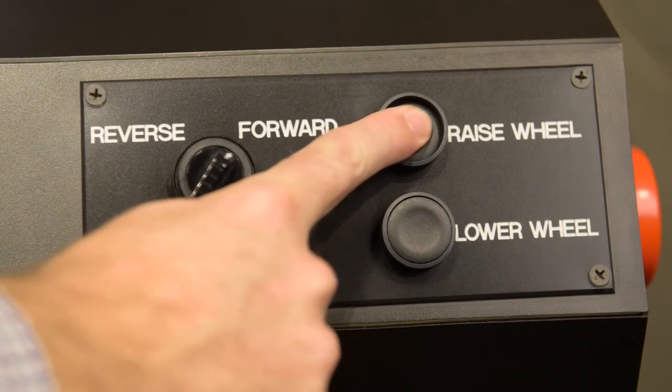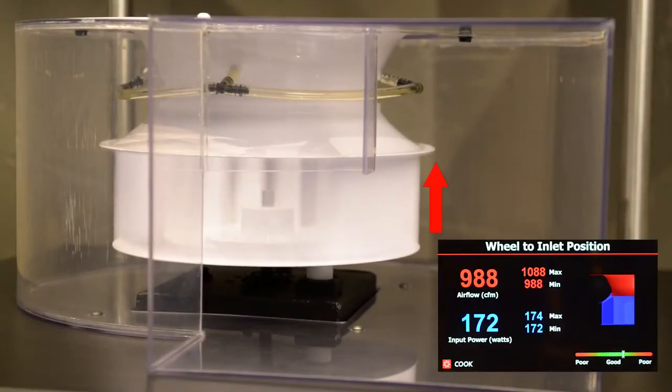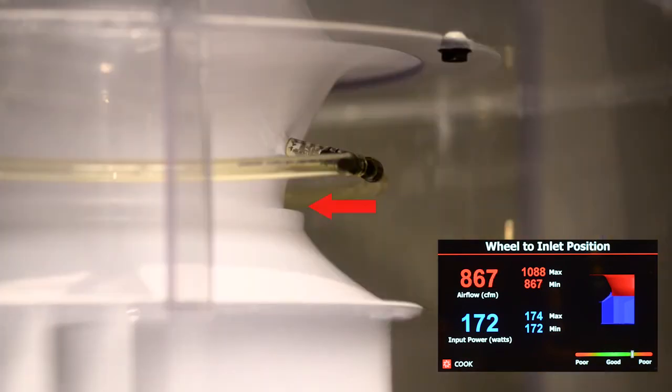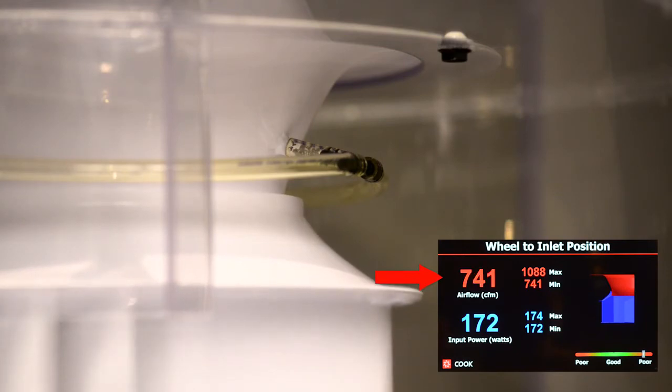First, we'll raise the wheel to increase the overlap and see what happens. Increasing the overlap makes the gap between the wheel and inlet larger. You can see that the airflow is dropping as the wheel gets higher.